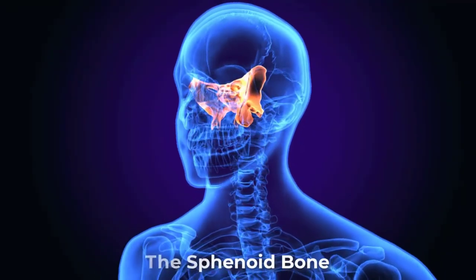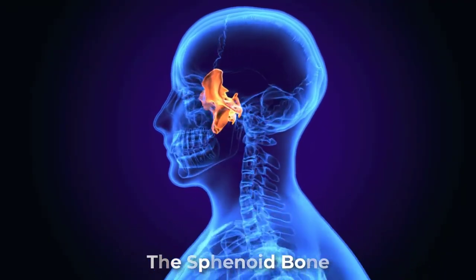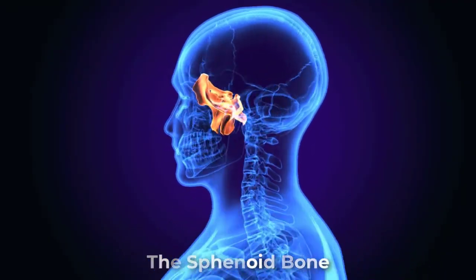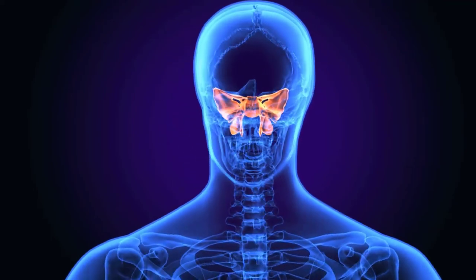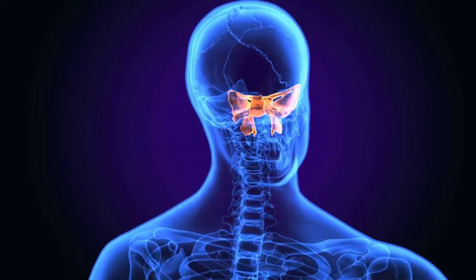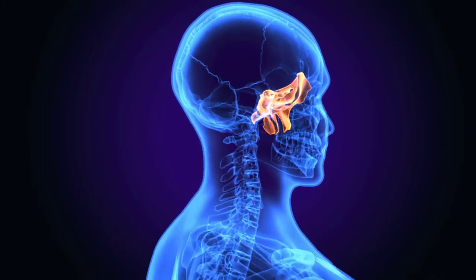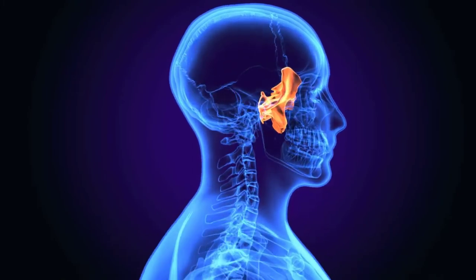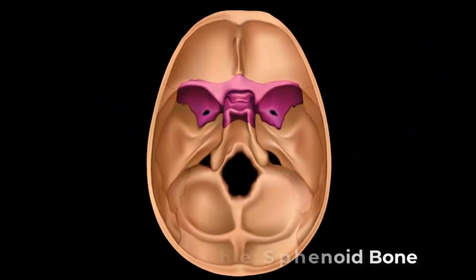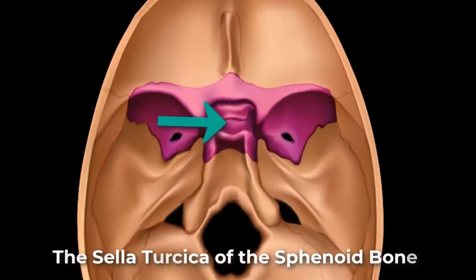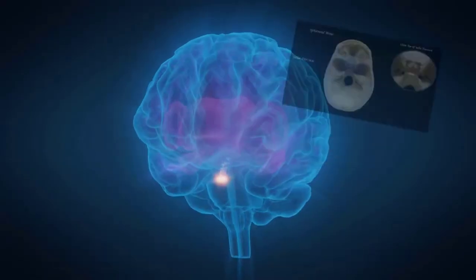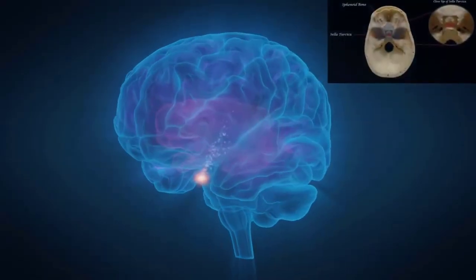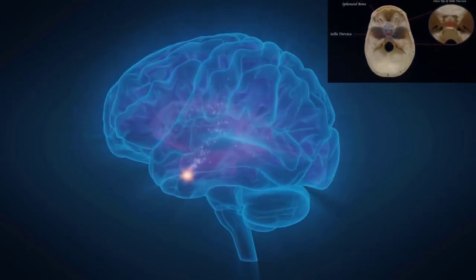The sphenoid bone is a single complex bone located at the center of the skull. It serves as a keystone bone because it joins with almost every other bone of the skull. The sella turcica is located at the midline of the middle cranial fossa. This houses the pea-sized pituitary gland.